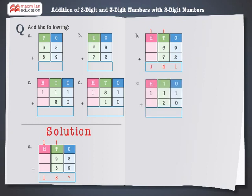Let's solve the next problem: 111 plus 20. Add the digits at the 1's place: 1 plus 0 is equal to 1. Now add the digits at the 10's place: 1 plus 2 is equal to 3. Finally, add the digits at the 100's place: 1 plus 0 is equal to 1. Thus, 111 plus 20 is equal to 131.